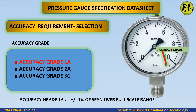Accuracy requirement selection. Accuracy grades available are 1A, 2A, and 3C. We select accuracy grade 1A, which is plus or minus 1% of span over the full scale range.